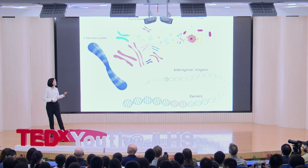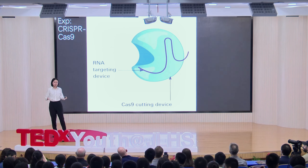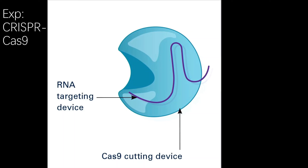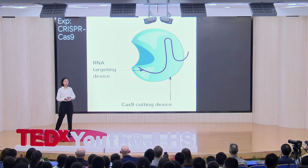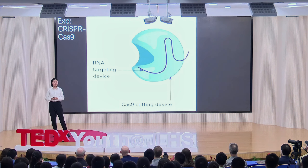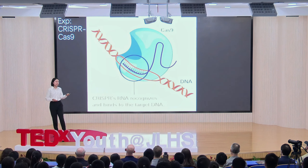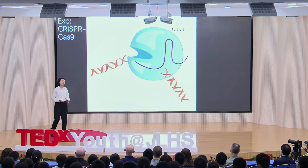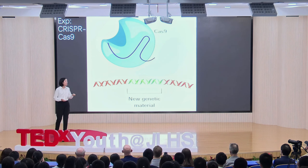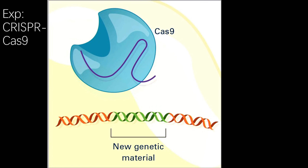Well, that seems like an easy theory, but how can we put the theory into practice? Let's take CRISPR-Cas9, the Nobel Prize-winning technology, for example. Cas9 consists of two parts: the DNA-targeting device and the DNA-cutting device. The targeting device is a strand of RNA used for identifying the DNA. First, the targeting device identifies and binds to the target DNA, and the cutting device cuts it into two parts. After that, an enzyme brings in a new sequence and seals it into the original position. And that marks the end of a genetic modification procedure.